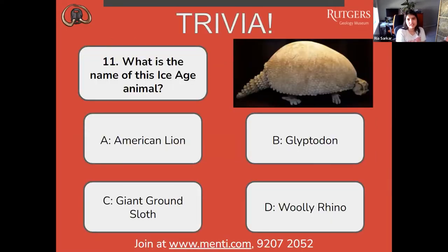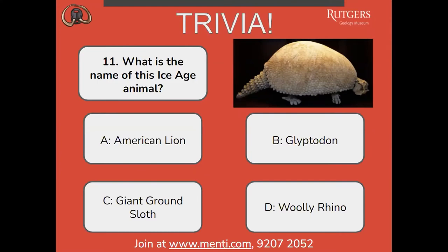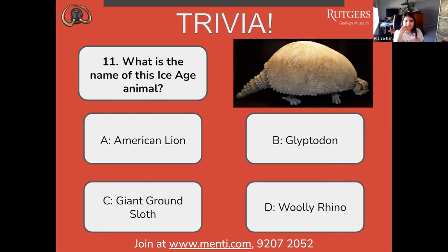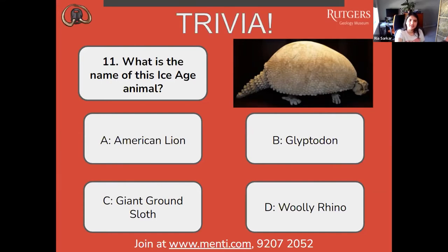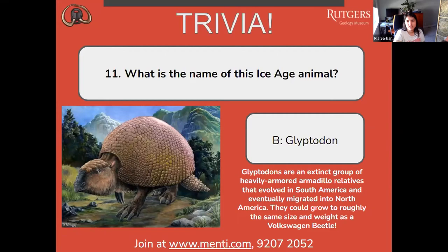Number eleven: what is the name of this ice age animal? Is it A, American lion; B, glyptodon; C, giant ground sloth; or D, woolly rhino? The correct answer is B, glyptodon. Glyptodons are an extinct group of heavily armored armadillo relatives that evolved in South America and eventually migrated into North America. They could grow to roughly the same size and weight as a Volkswagen Beetle.